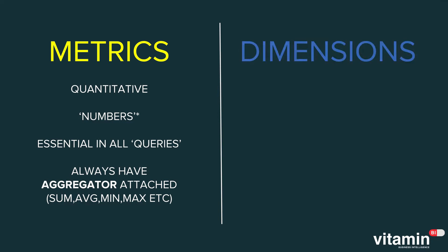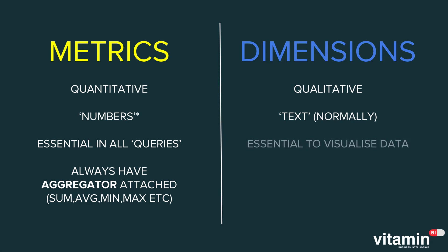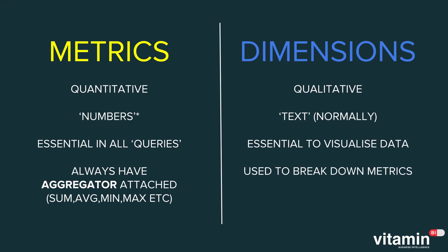Now let's break down dimensions. Whereas metrics are quantitative, dimensions are the qualitative data points, used to describe the quality of something. Nine times out of ten dimensions will be text data points, but they can also be numbers — I'll demonstrate this in a minute. Dimensions are essential for visualizing data. Without them you can't create charts and graphs, because they're used to break down the metrics.